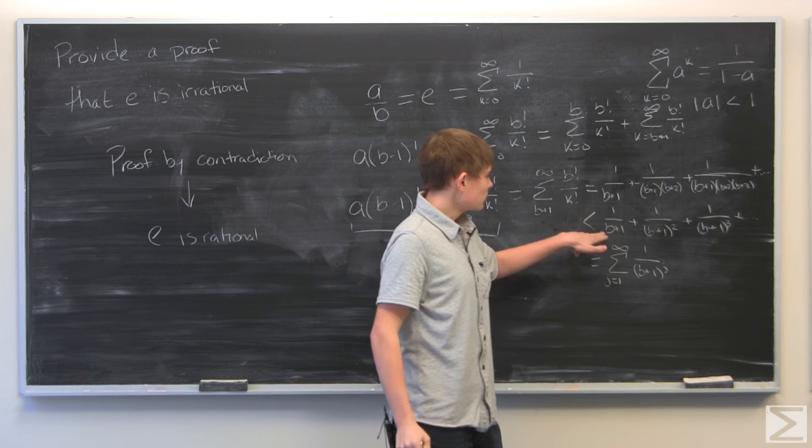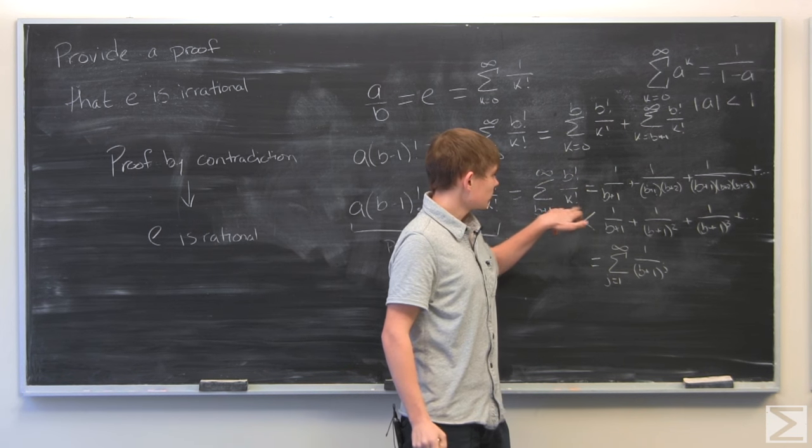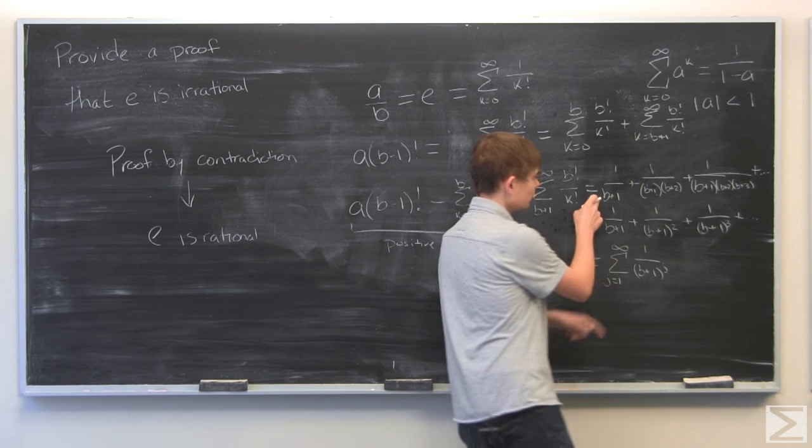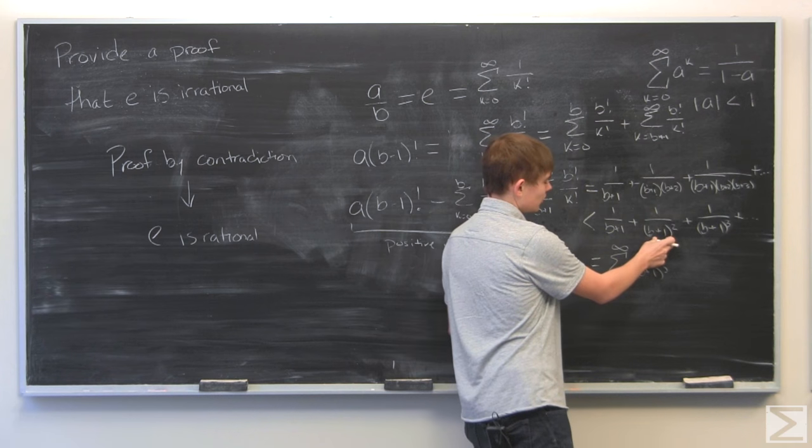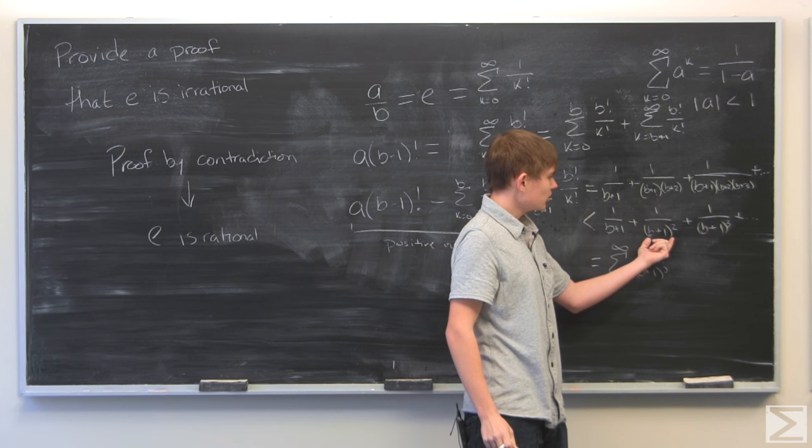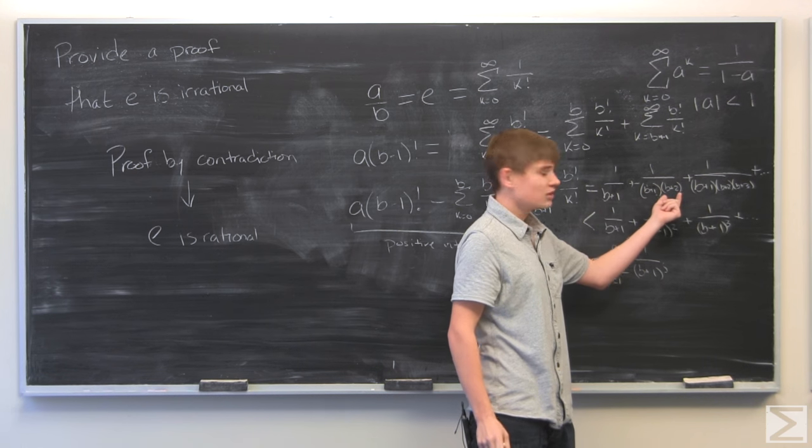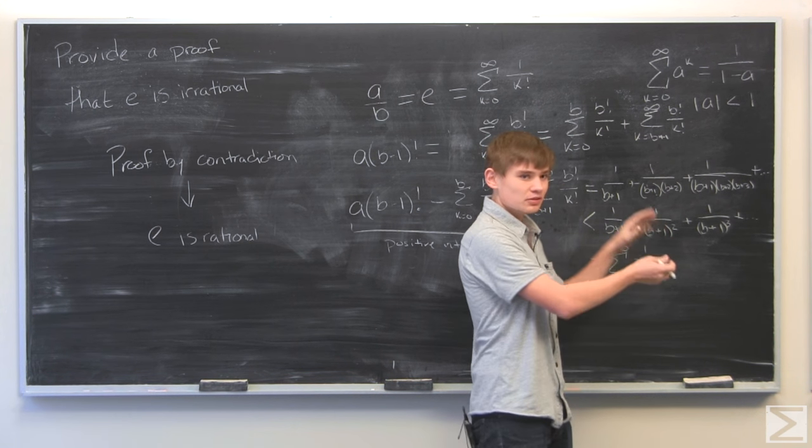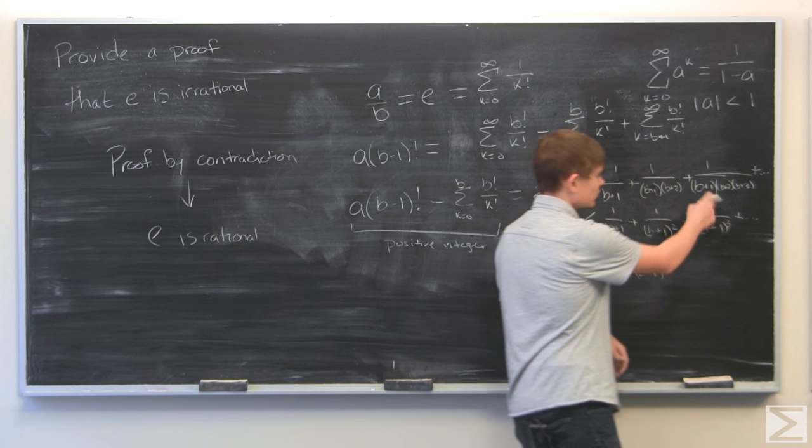So what we did is we said that this sum or these terms, each of these terms is going to be greater than this term, since B plus 1 times B plus 1 is going to be less than B plus 1 times B plus 2, since it's the reciprocals. This is going to be larger than this, and so on, all the way on.